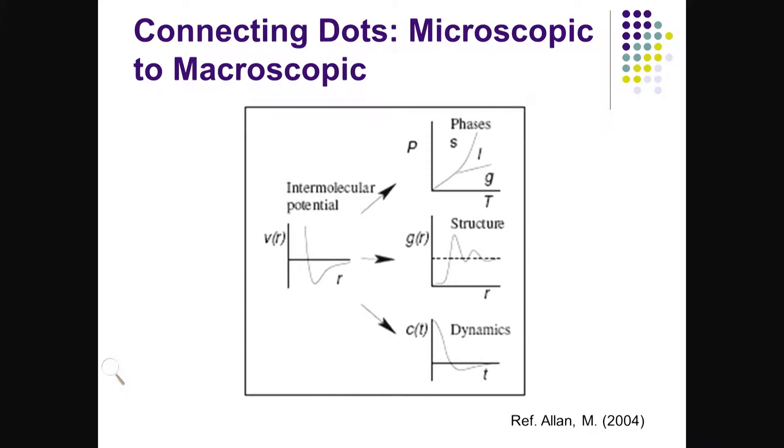In the previous section, we talked about computational science and how it connects different ideas between theory and experiment. We are particularly looking at connecting the dots between experiment and theory by using computational experiments. So if you look at a material system like water, which is the most abundant material on earth, we see that water has three phases: liquid water, ice, and vapor or steam. We can connect those dots by doing computational experiments between these three different phases, and that's where the power of computational science and engineering comes from.